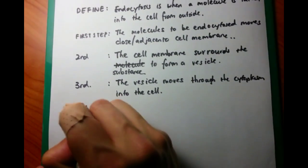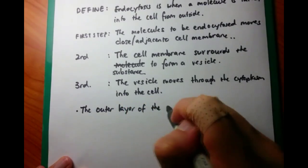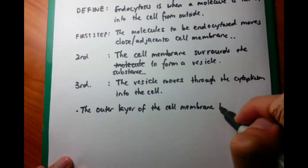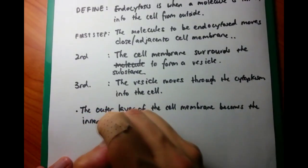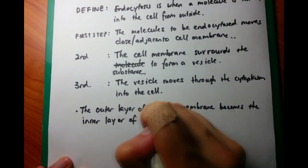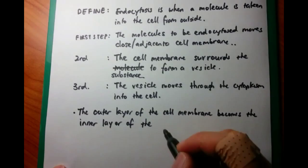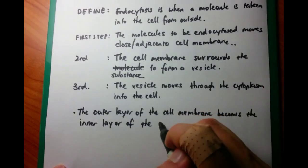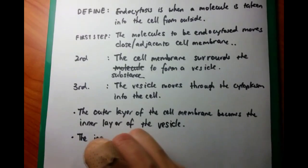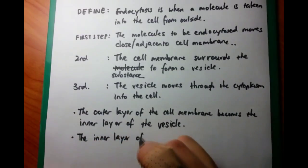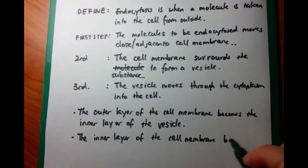A couple of interesting points in the answer scheme: the outer layer of the cell membrane becomes the inner layer of the vesicle, and the inner layer of the cell membrane becomes the outer layer of the vesicle. These are so easy, but they'll give you two marks each. If you can remember this when talking about endocytosis as well as exocytosis, you can get a bonus two marks.